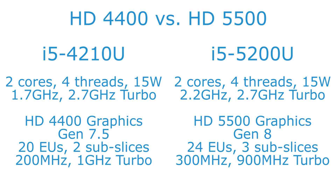For HD5500, we move to Intel's new Gen 8 graphics design, which brings a 20% increase in execution units to 24. These are spread across 3 subslices, so while there's a 20% increase in execution units, there's also a larger increase in the number of samplers and other units shared on a subslice basis.